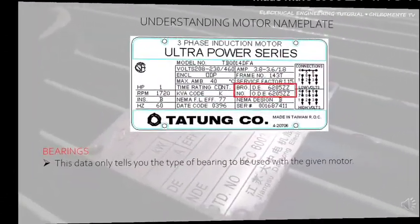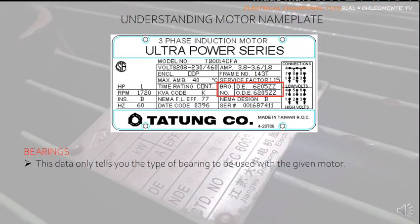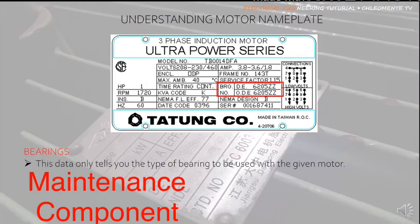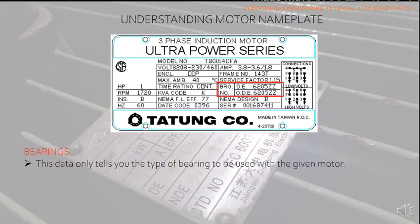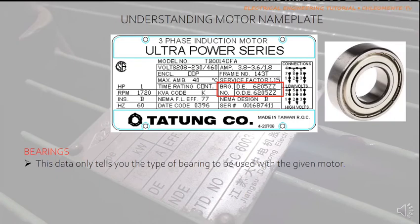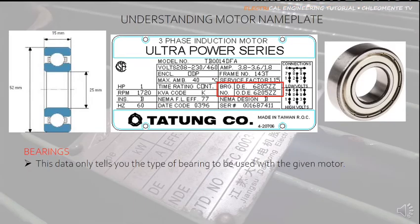Bearings: Though NEMA does not require it, many manufacturers supply bearing data on the nameplate because bearings are the only true maintenance components in an AC motor. This is very important data for maintenance personnel. Some larger motors require proper lubrication. In this example, 6205ZZ bearings for both drive and opposite drive ends means a ball bearing, double seal, with a 25mm bore and 52mm outer diameter.